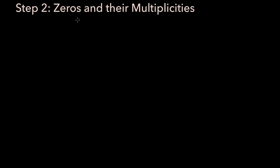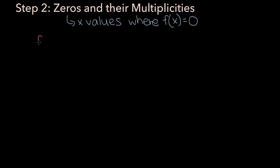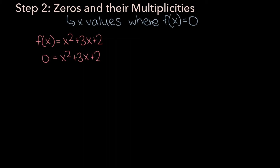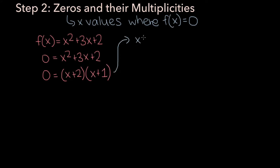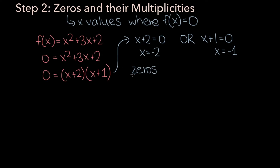Now let's talk about zeros. Zeros are the x values where the function is equal to zero. Let's say we had the function f of x equals x squared plus 3x plus 2, and we wanted to find its zeros. We equate the function to zero: 0 equals x squared plus 3x plus 2. Factoring the right side gives 0 equals x plus 2 times x plus 1. The right side equals zero when x plus 2 equals zero or x plus 1 equals zero, giving us x equals minus 2 and x equals minus 1 as our two zeros.